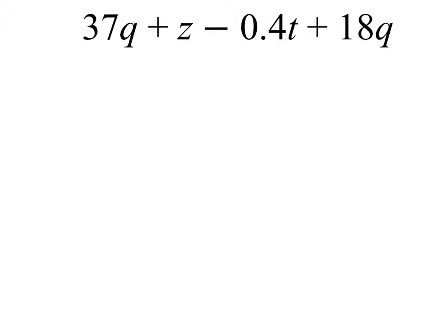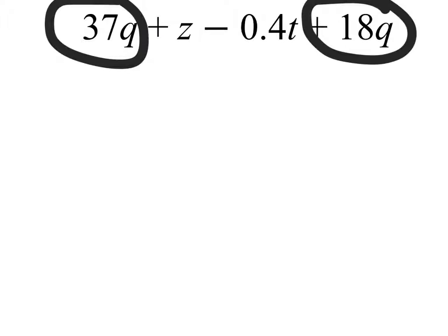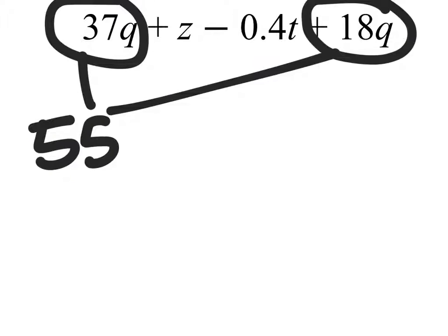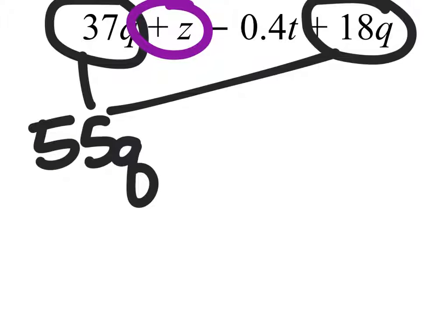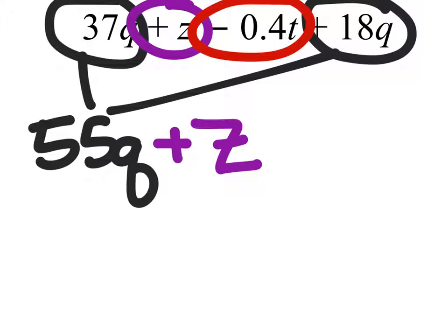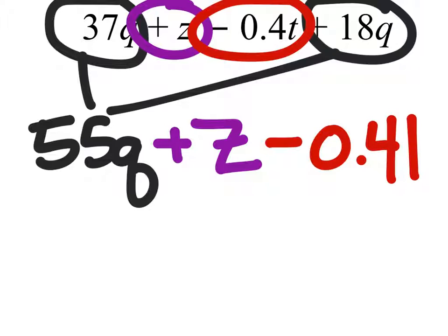In part B, we have these 37 q's and these 18 q's, which if we combine right over here, we would get 55 q's. Now there are no other terms that have a z, so we're just going to add the z. Same with this negative 0.4t — there are no other t's, so we just subtract 0.4t.